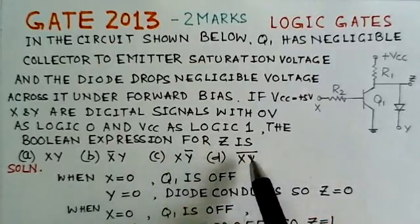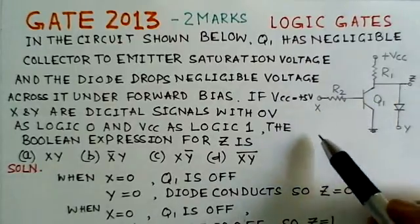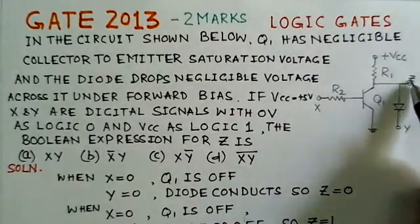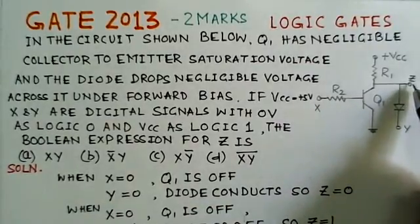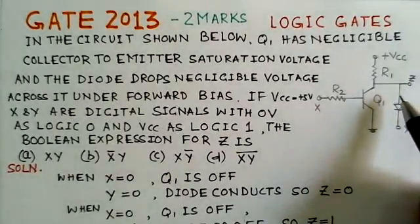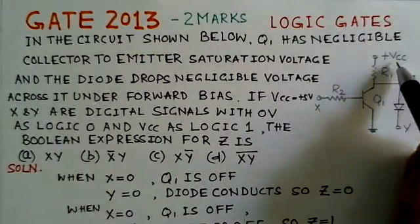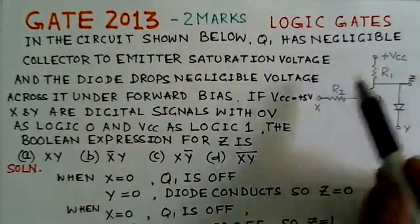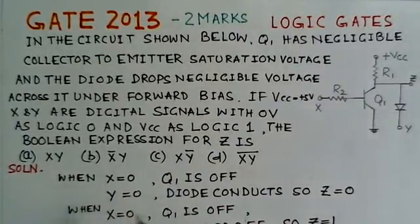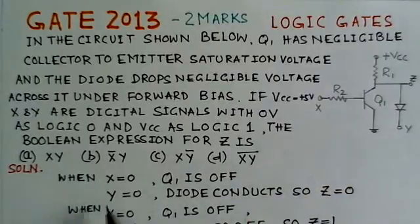The Boolean expression for Z is what we have to find. Here the two signals applied are X and Y and Z is the corresponding output. Logic 0 is 0 volts and logic 1 is VCC, that is 5 volts. Basically, we have to see for all the possible X and Y inputs what is the corresponding output.